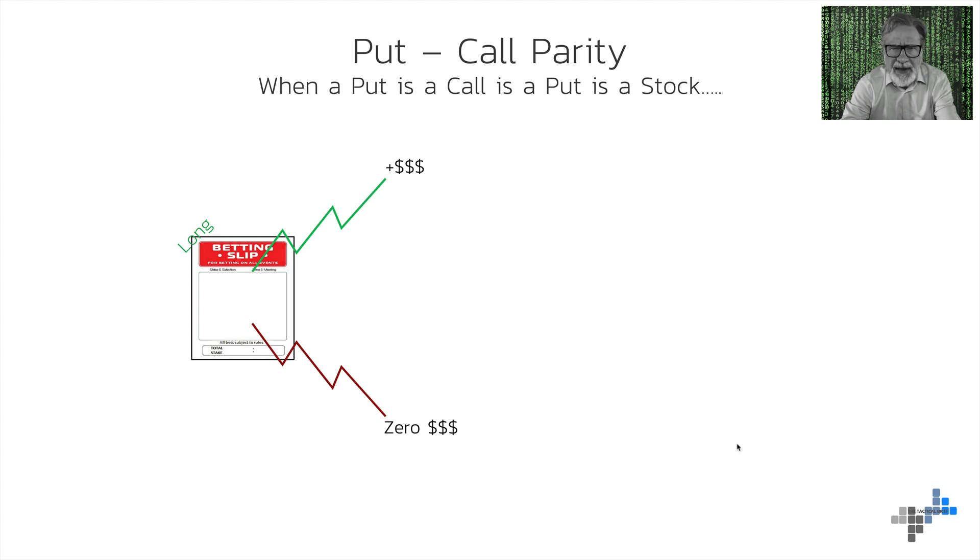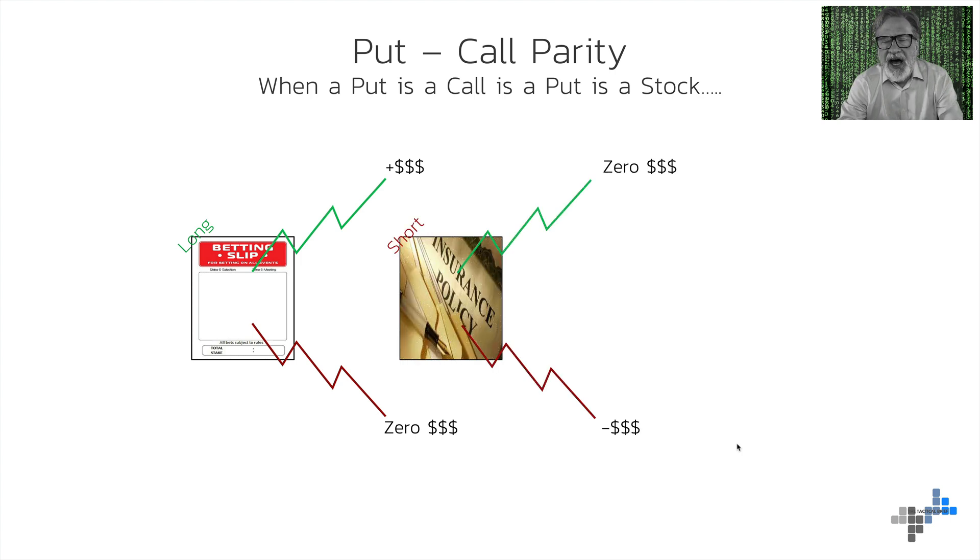Third scenario is, I want to be just long on the upside. I buy a betting slip, our call. In this case, the market goes up, I make a lot of money. Market goes in the different direction, I only lose the premium I've invested. The premium I've invested costs money. That's the insurance money. So, what can I do? I could sell an insurance to somebody else. I could sell a put option, which means if the stock in question, the underlying, is falling, then I have to pay out the other guy for this. So, what does he have to give me? He has to give me an insurance premium for that.